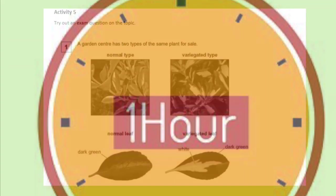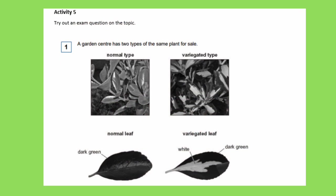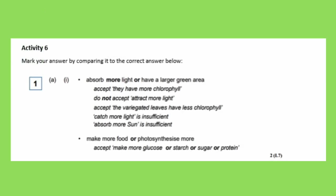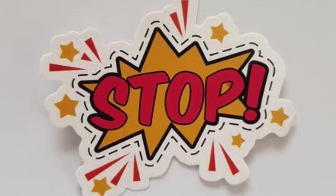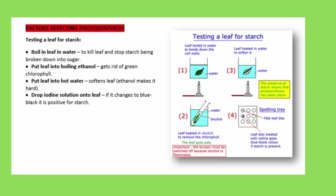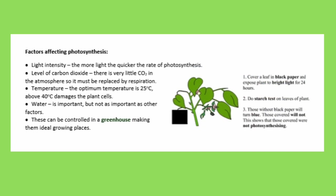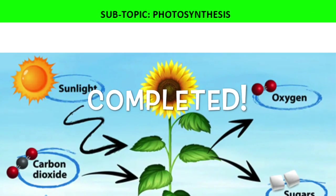The first activity: look in the back of your booklet for activity five — there's an exam question you can have a go at, then mark it once completed. Only move on if you have answered, marked, and corrected the exam question. The last activity, if you have time, is to take the section on factors affecting photosynthesis and create a revision card — or more than one. If you don't have revision cards at home, just cut up some pieces of paper. Well done — that's lesson five completed!